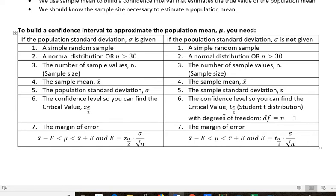This t distribution, once you get to 30 values, starts to look a lot like the standard normal distribution. So they do sort of start to merge. But when you have really small numbers they don't match.